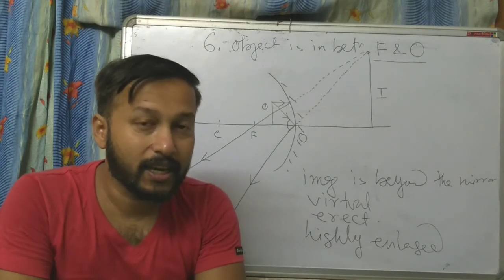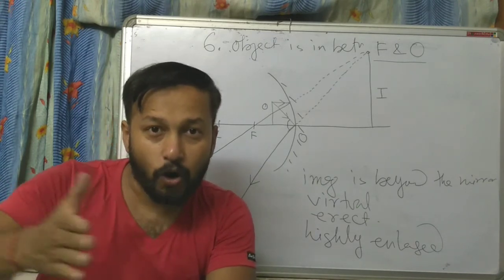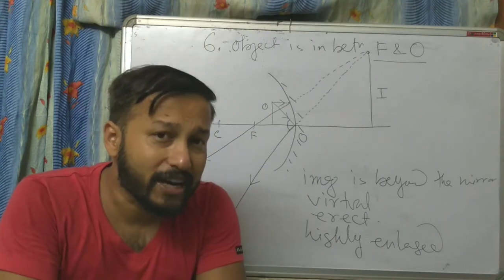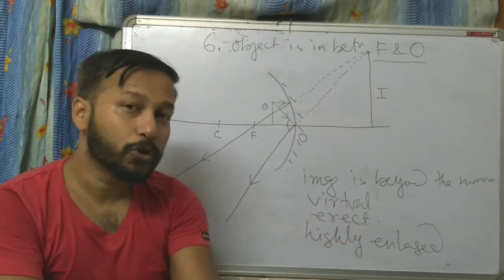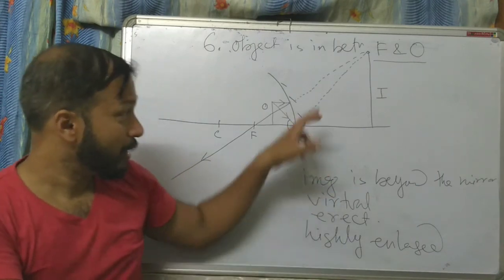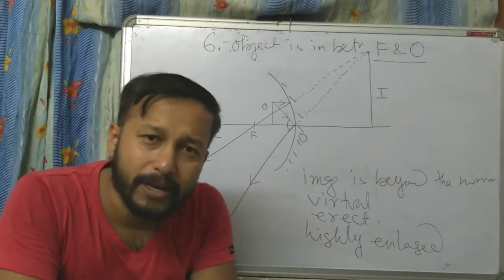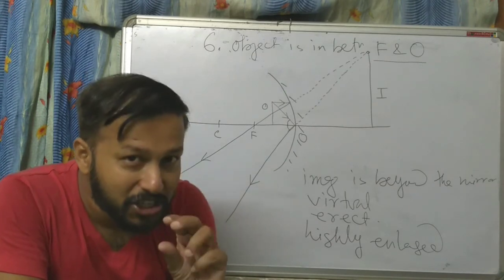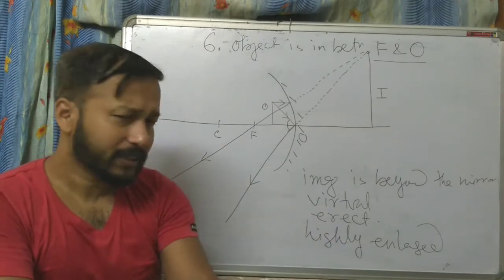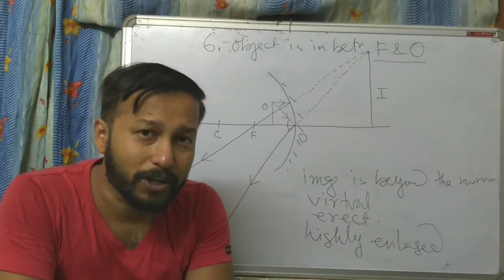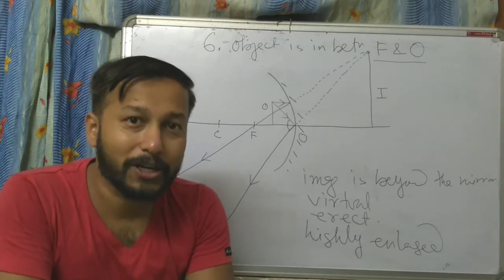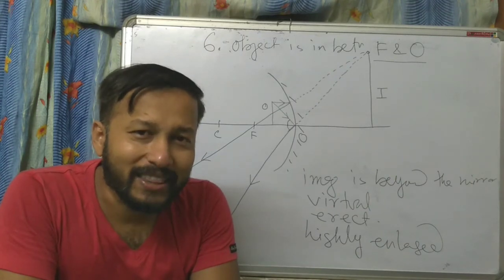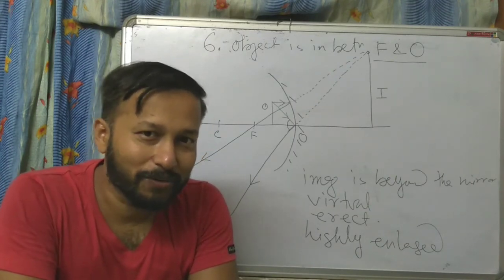We have now finished all six cases. We placed the object in six different positions and saw where the image forms. We also studied the nature of the image: whether it is real or virtual, enlarged or diminished, and erect or inverted. Ray diagrams are easy but require practice.